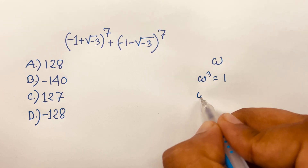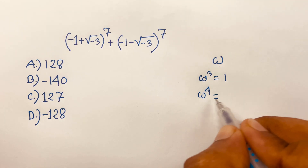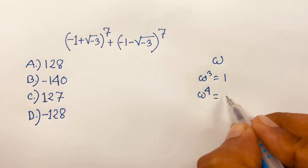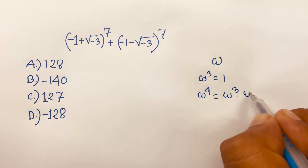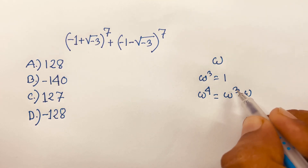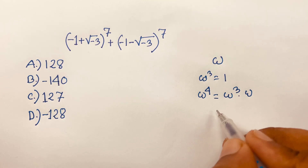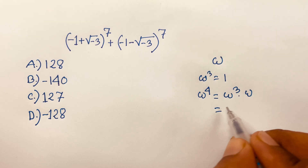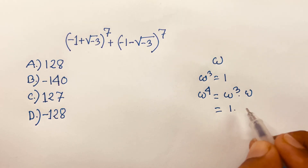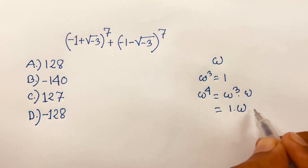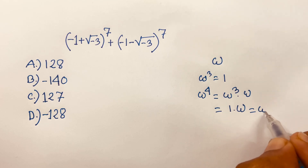According to this rule, omega power 4 is equal to what? Omega power 4 will be omega power 3 times omega. Since 3 + 1 = 4, omega power 3 equals 1, so 1 times omega equals omega.